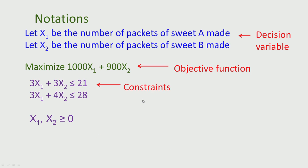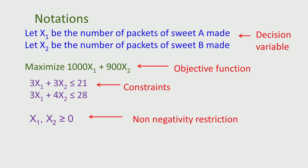We then wrote 3X1 plus 3X2 less than or equal to 21, and 3X1 plus 4X2 less than or equal to 28. These two conditions, or constraints, limit the values that the decision variables can take. There are two constraints in this problem. We also wrote X1, X2 greater than or equal to 0, stating we are not going to produce negative quantities. Therefore, we have explicitly stated a non-negativity restriction on the variables.